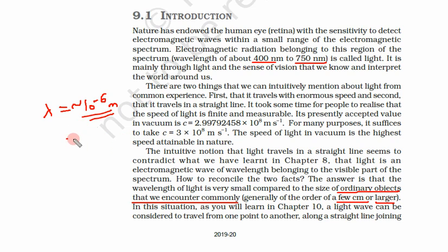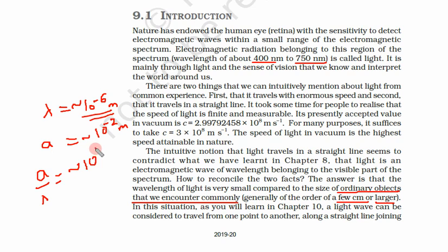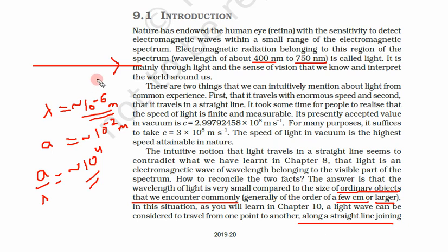The size of daily objects, A, is generally 10⁻² meters. So in this case we can say A is around 10⁴ times larger than the wavelength of light. That is why we can say that the ray approximation — that light travels in a straight line — is a good approximation. But if we go to very small objects, then this approximation is not correct, and we will learn that later.